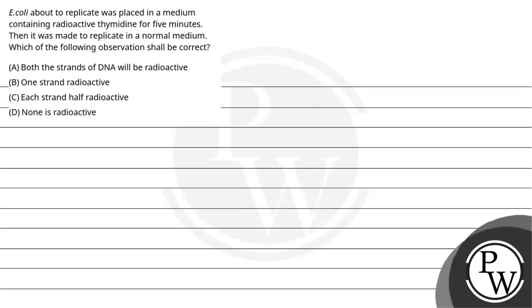Let's see this question. This question says E. coli about to replicate was placed in a medium containing radioactive thymidine for five minutes, then it was made to replicate in a normal medium. Which of the following observations shall be correct? A) Both the strands of DNA will be radioactive, B) One strand radioactive, C) Each strand half radioactive, D) None is radioactive.